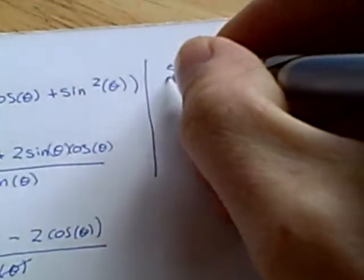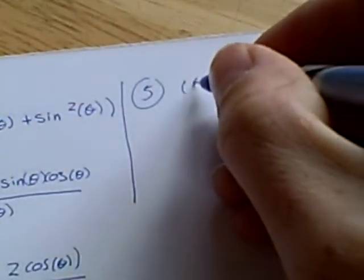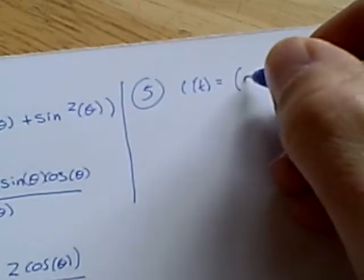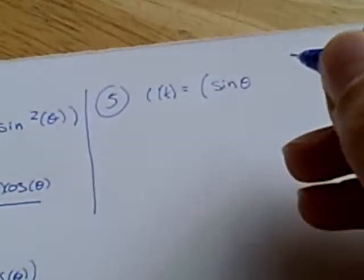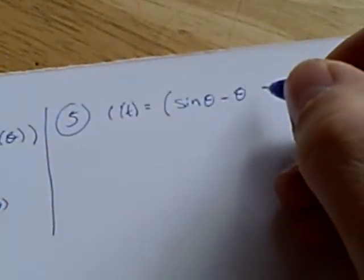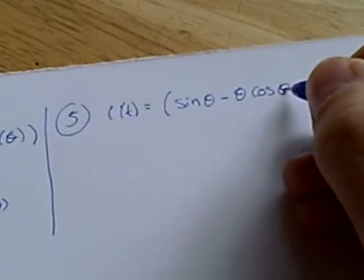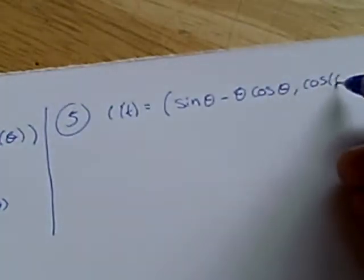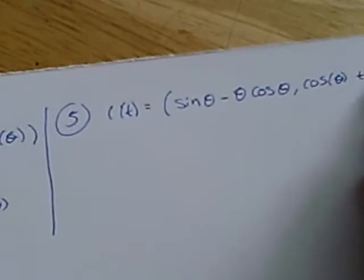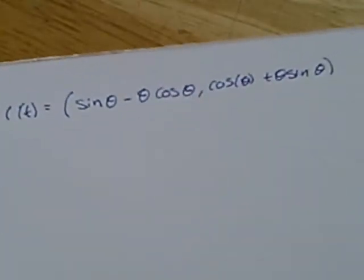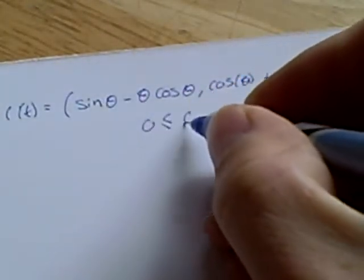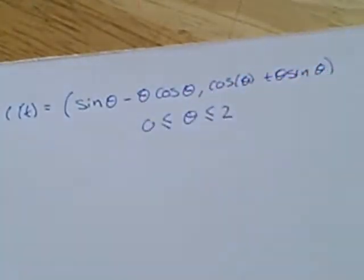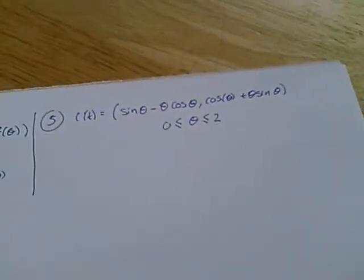Okay, moving on. Number 5 is about finding the arc length. Given a parametric equation, c of t, equals what looks to be a horrendous parameterization. But it's not that bad actually. Get cosine plus θ, sine θ. It's quite long. And we're given the limits of integration. Let's zoom out a little bit.